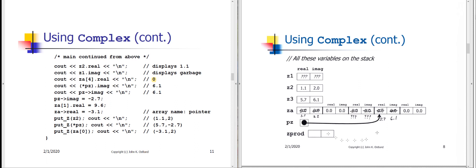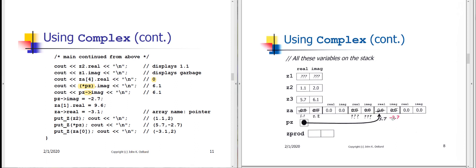pz is pointing at the complex object equivalent to za[3]. So '(*pz).imag' gives the imag part, which is 6.1. Equivalently, 'pz->imag' is exactly the same thing using the arrow notation. We then assign 'pz->imag = -2.7', changing what was 6.1 to -2.7.